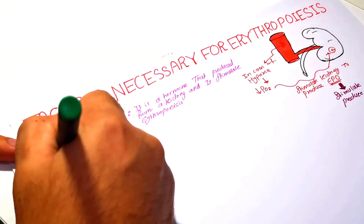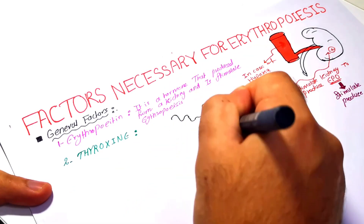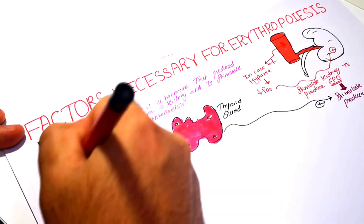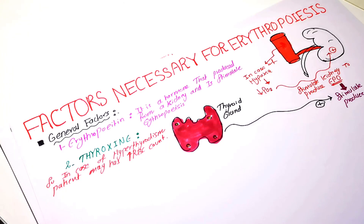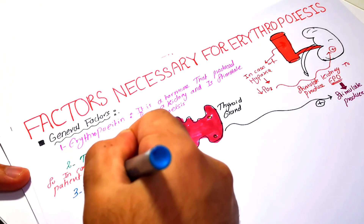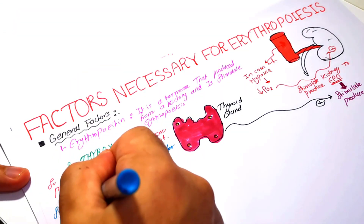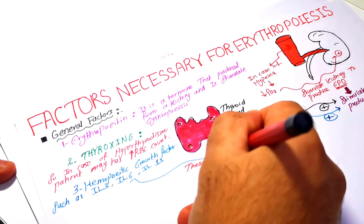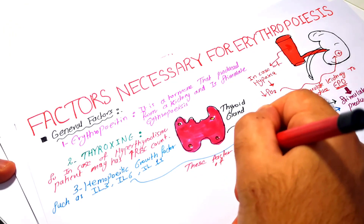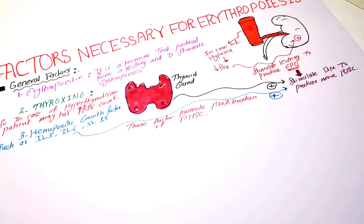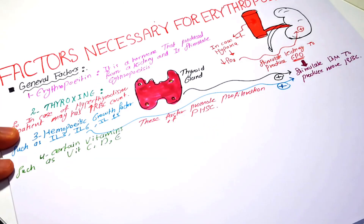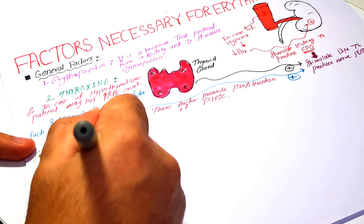The second factor is thyroxine, which is produced from the thyroid gland. Thyroxine also has a stimulatory effect on bone marrow to enhance the process of erythropoiesis. In the case of hyperthyroidism, patients may have increased RBC production, known as polycythemia. The third factor is hematopoietic growth factors, such as interleukin-3, interleukin-6, and interleukin-11, which are very important in enhancing and stimulating the differentiation of pluripotent hematopoietic stem cells. The fourth factor includes certain vitamins such as vitamin C, vitamin D, and vitamin E, all of which are very important to enhance the process of erythropoiesis.